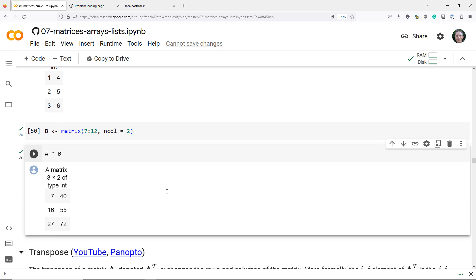So element-wise matrix multiplication is very easy to do in R. It's very fast, and you simply need to use the star operator on matrices that have the same dimensions.